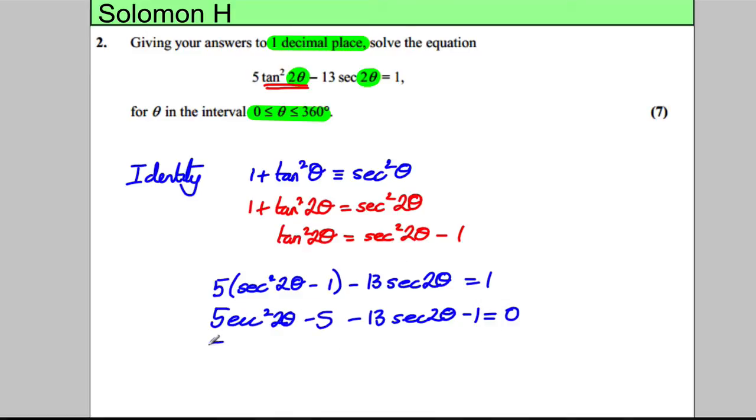Combining everything neatly, 5 sec squared 2 theta, subtract 13 sec 2 theta. Negative 5 combined with another negative 1 is going to be negative 6, and that's going to be equal to 0.